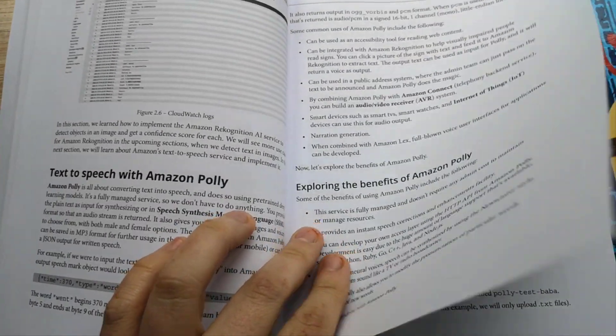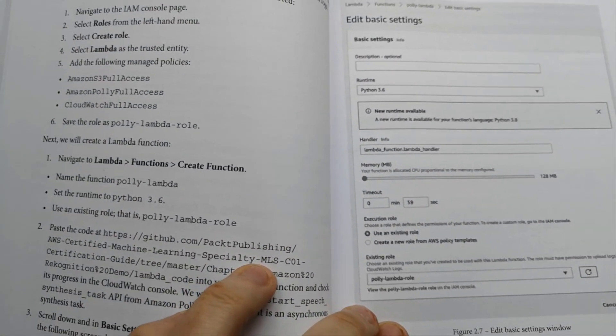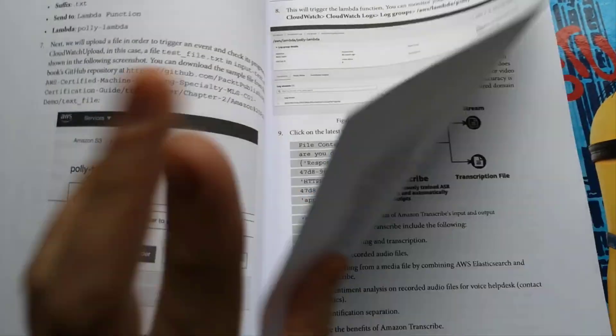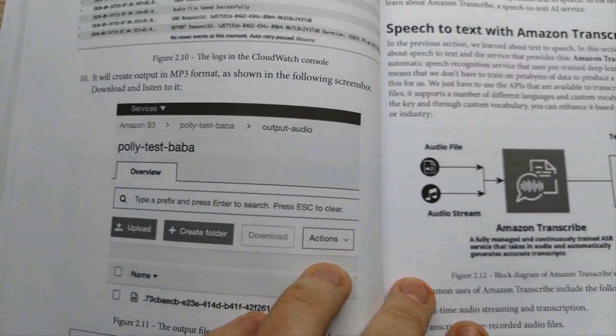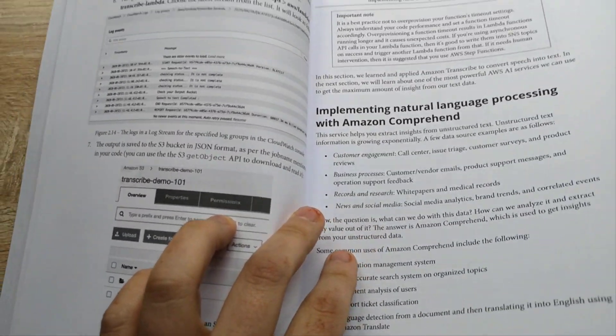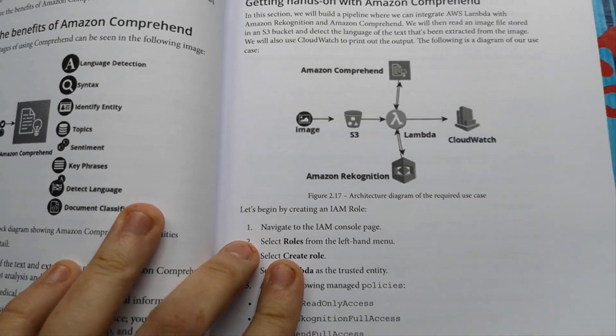There will be Amazon Recognition to analyze images and videos. Amazon Polly to text to speech problems. Amazon Transcribe to solve speech to text problems. Amazon Comprehend for NLP implementation. Amazon Translate for translate documents. Amazon Textract to extract text from documents. And Amazon Lex to create a chatbot.